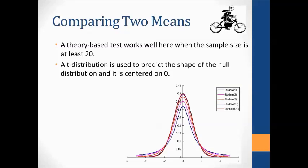With theory-based methods for means, the theory-based test works well when the sample size is at least 20 — we don't have successes and failures like in proportions. We just look at the sample size. If it's at least 20 and the data isn't highly skewed, a t-distribution works fairly well to predict the shape of a null distribution. A t-distribution is very similar to a normal distribution — just a little wider in the tails — and it's dependent on sample size. When sample size is fairly large, normal and t are almost identical.